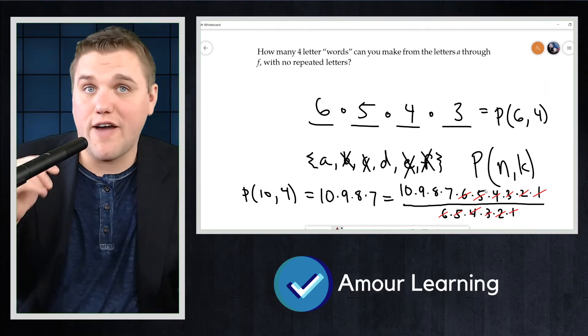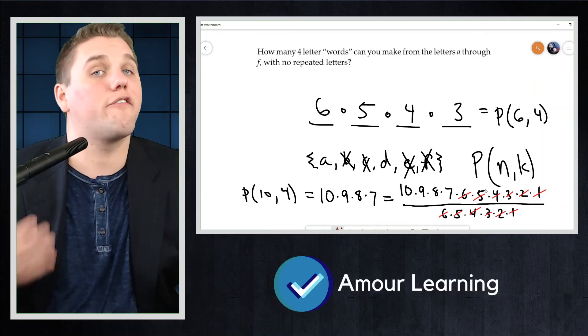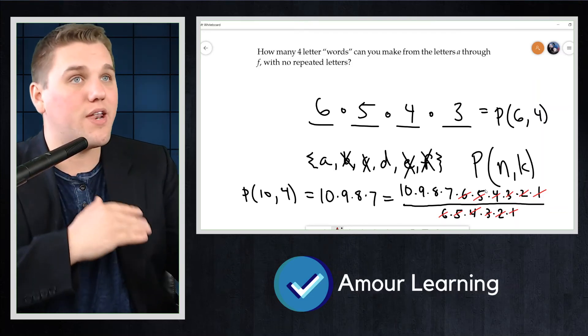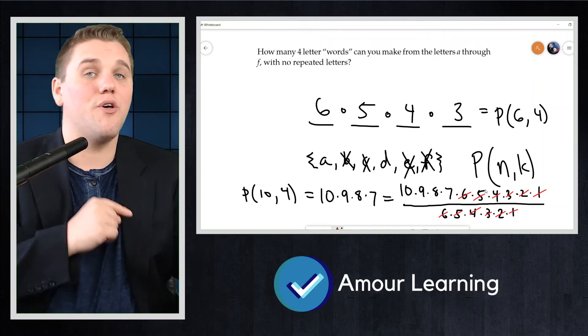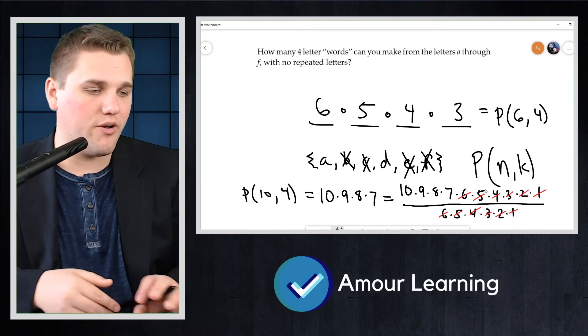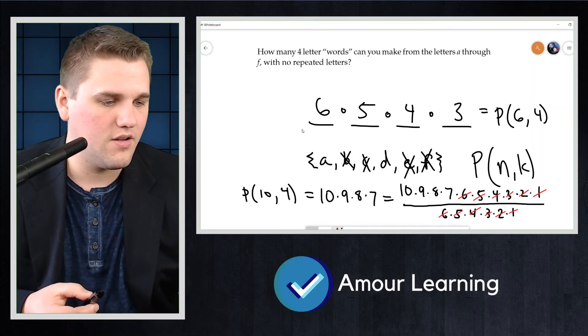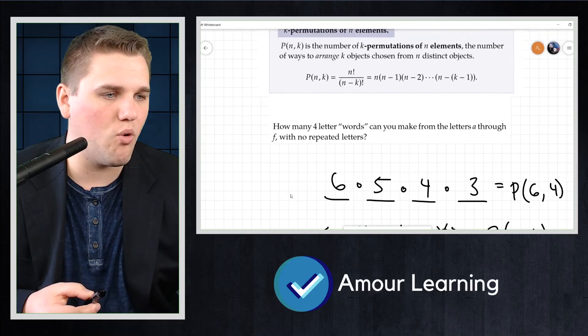Now, careful. The factorial in the denominator is not four factorial. There are four objects, but the denominator here is not four factorial, but rather 10 minus 4 factorial, which is six factorial.